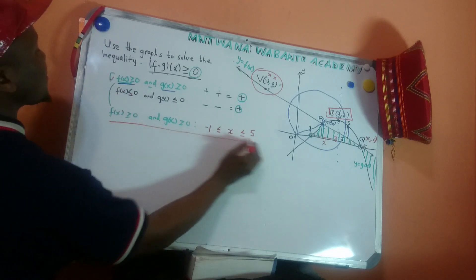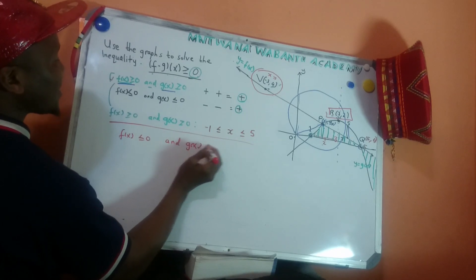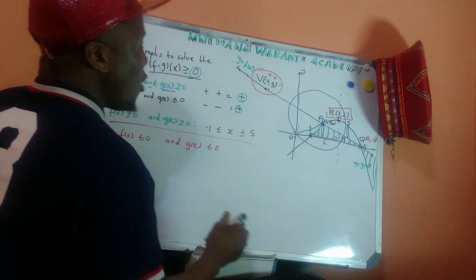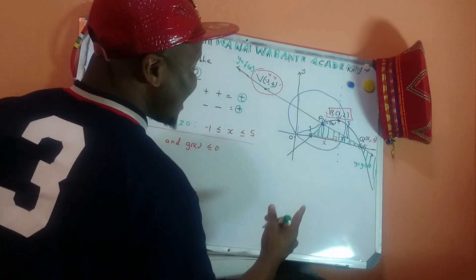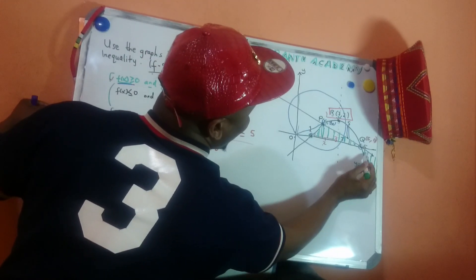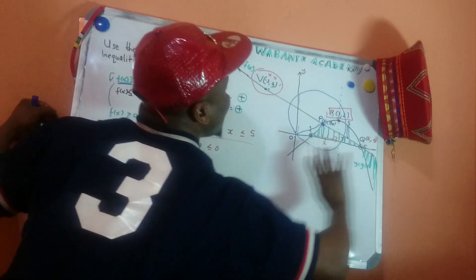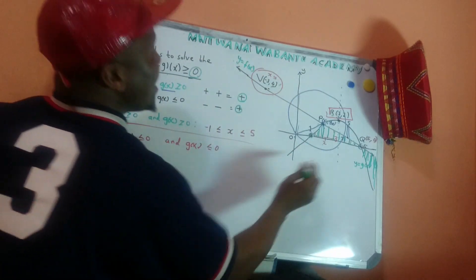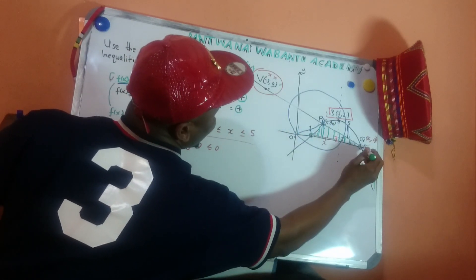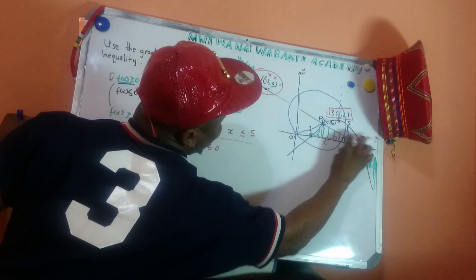For the second case: f(x) ≤ 0 and g(x) ≤ 0. We want to see where g(x) and f(x) are both below the x-axis. Looking at the graph, here is f(x) — a line — and this is g(x) — a parabola — and both of them are below the x-axis here.